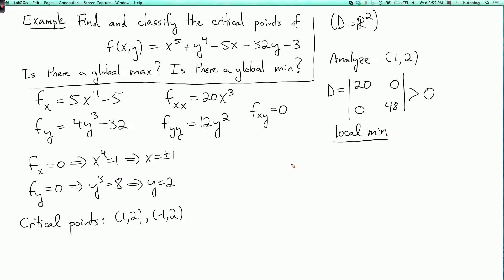Now let's analyze minus 1 comma 2. Here d is now I have 20 times minus 1 cubed, which is minus 20, and the rest of the matrix is the same as before. So this determinant is negative, and so this critical point is a saddle. It's neither a local min nor a local max.